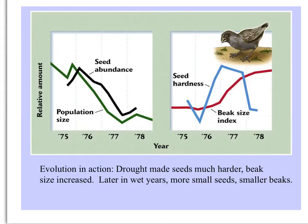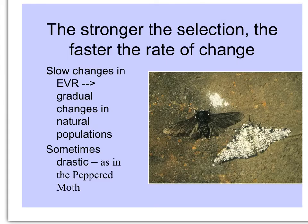As seed hardness increased, the width and strength of the beaks of the seed-cracking finches increased. After this period, in wetter years, seeds became softer and the beaks became smaller again. In any situation, the stronger the selection, the more quickly the changes will occur in a population.